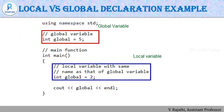Here is an example of global and local declaration. A global declaration is placed before the main function, while a local variable is declared inside the main function. This example demonstrates both global and local variable usage.